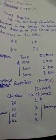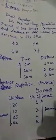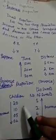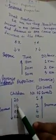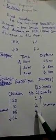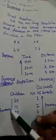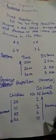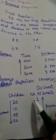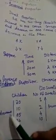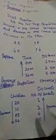For example, we have 20 sweets to distribute among 20 children, so each child gets one sweet. If children decrease to 10, then each child will get more sweets. Here the number of children is decreasing and the share of sweets per child is increasing. This is called inverse proportion — if one quantity decreases, the other increases.